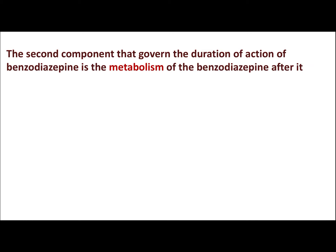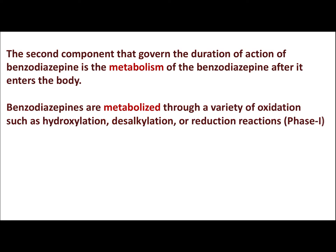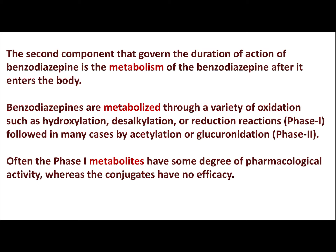The second factor governing the duration of action of benzodiazepines is metabolism — specifically what kind of metabolic products are formed and whether they are active or inactive. Benzodiazepines are metabolized through a variety of Phase 1 reactions such as hydroxylation, desalkylation, or reduction, followed in many cases by Phase 2 reactions such as acetylation or glucuronidation. Often the Phase 1 metabolites have some degree of pharmacological activity, while the Phase 2 metabolites do not.